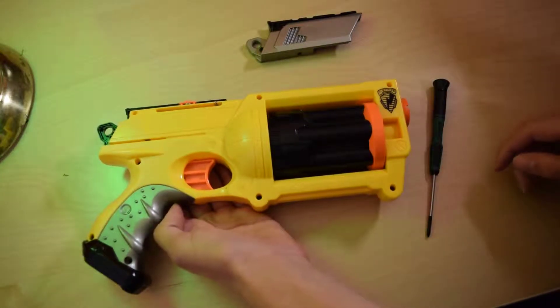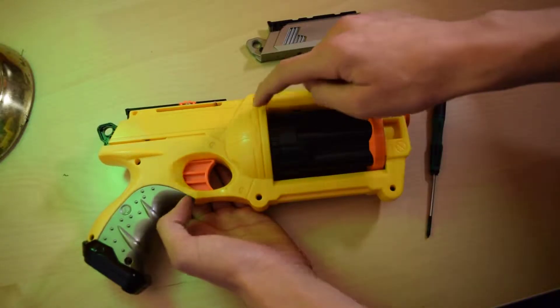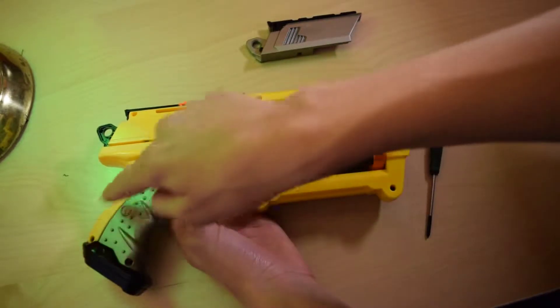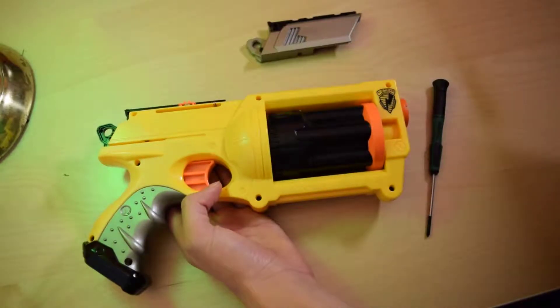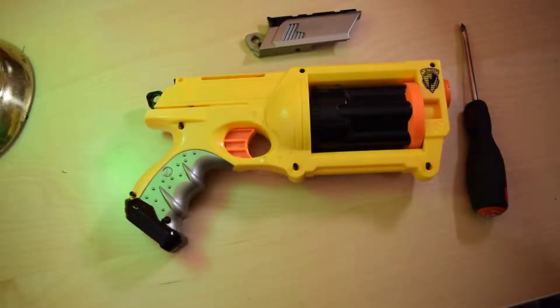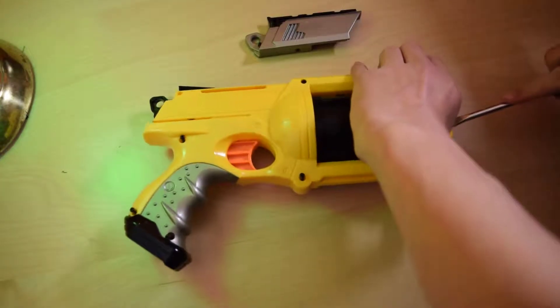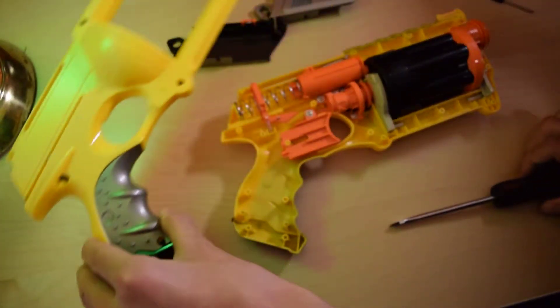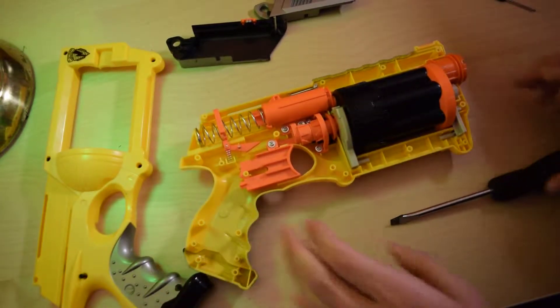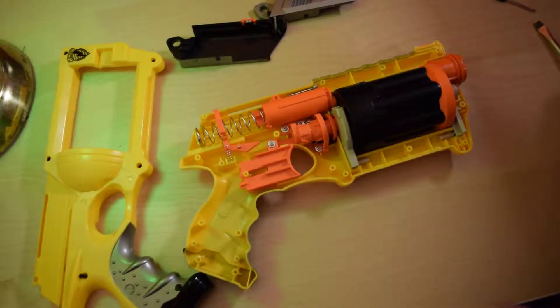Now you just need to remove the eight screws on the body. There are four on the front section, three on the handle, and then the one that was hidden behind the priming bar. After that, you can pry the shell open. And voila, the internals of the Maverick.